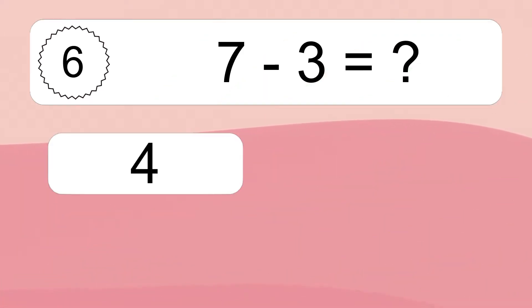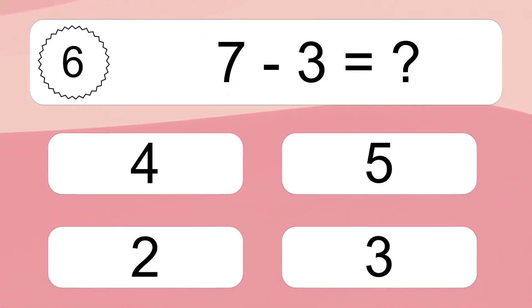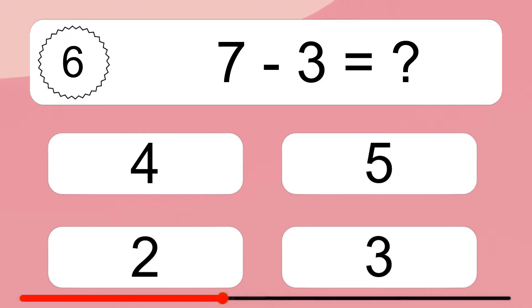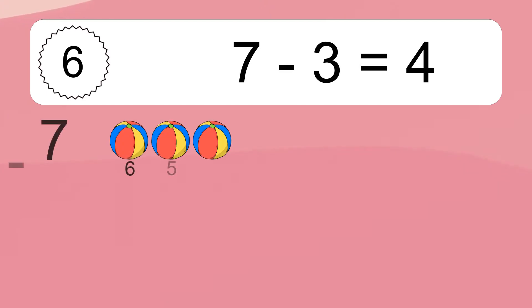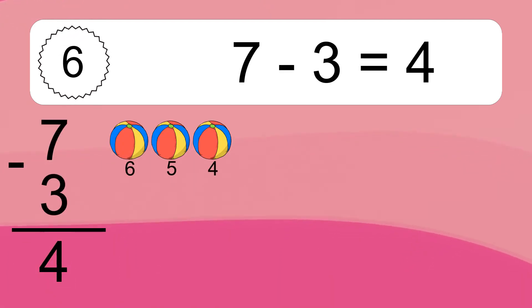7 minus 3 equals what? 7 minus 3 equals 4.